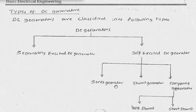In a series generator, the field winding is connected in series with the armature winding. In a shunt generator, the field winding is connected in parallel to the armature winding. The compound generator is a combination — part of the field is in series and part is in parallel with the armature winding.